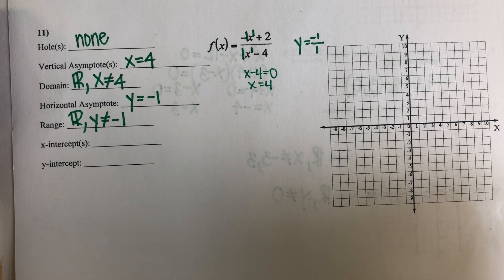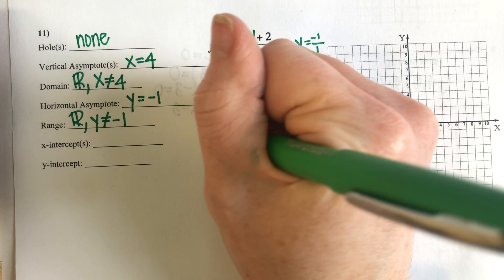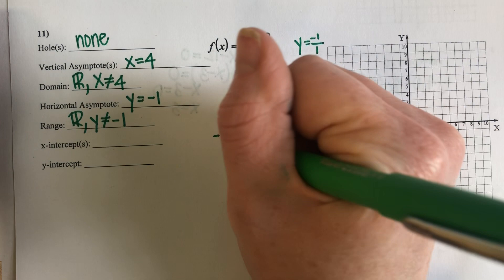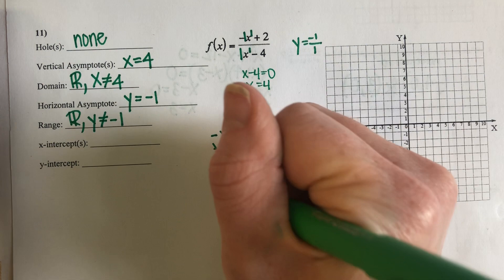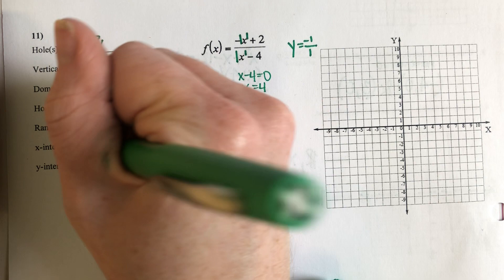My X intercepts come from when I set the numerator equal to zero. If I set the numerator equal to zero and start solving for X, I get negative X equals negative two. I'm going to divide by negative one, so I get X equals positive two. I want to remember to write it as an ordered pair.